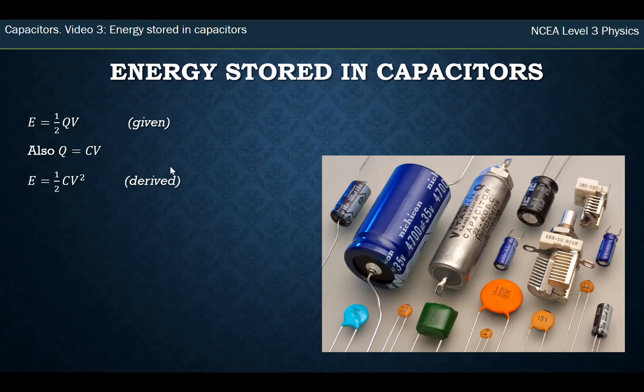And if you substitute that in, so instead of 1/2 QV, instead of the Q you put CV there. You already had a V from the original formula, so you get E = 1/2 CV². That's the derived formula, and that often ends up being far more useful because you're often given the capacitance and the voltage.